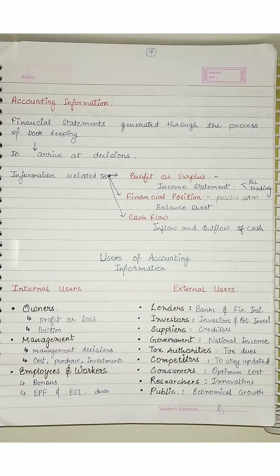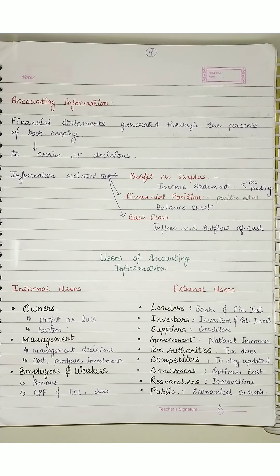Now consumers — consumers need to know that the accounting information being used is with proper control, so that things are produced at an optimum cost, so that they get goods at the right price, so that they are not exploited, and things are not overpriced. If goods are not made at optimum cost, things will be overpriced and in the end, it is the consumers who get exploited. So for consumers also, accounting information is important.